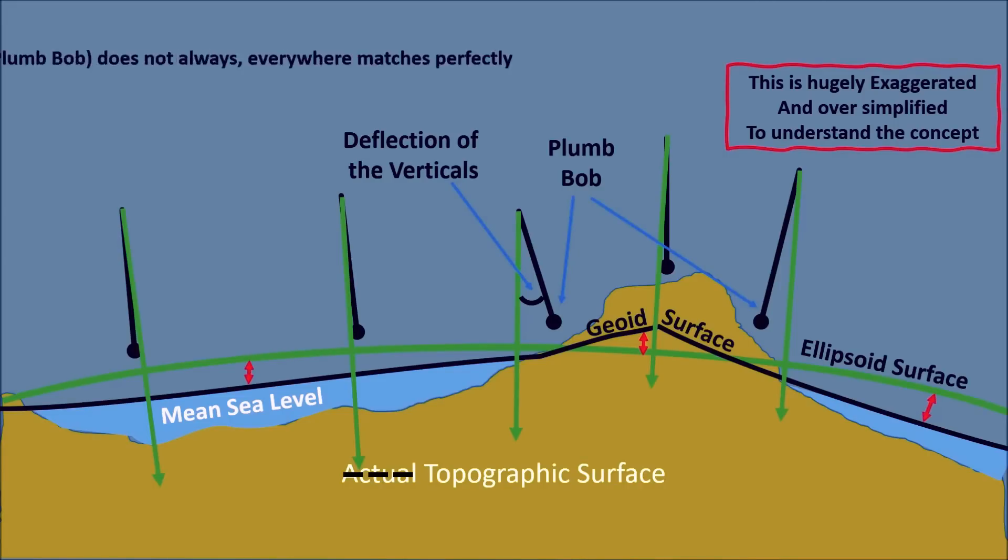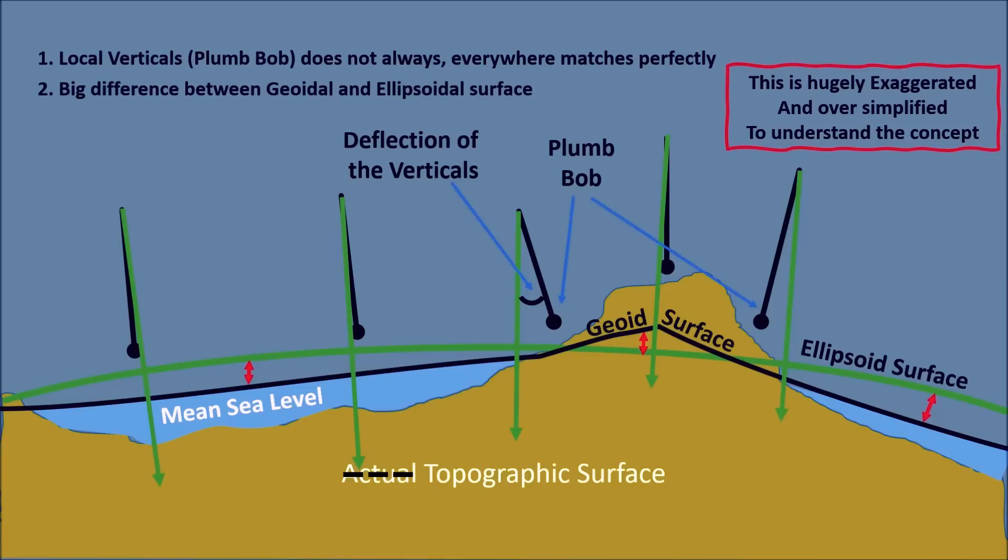So what we learned from this - local verticals do not always match perfectly everywhere and there is a big difference between geoidal and ellipsoidal surface.